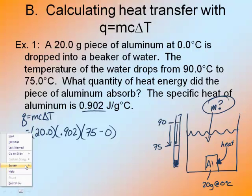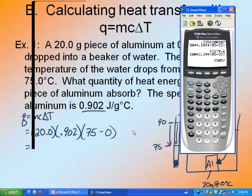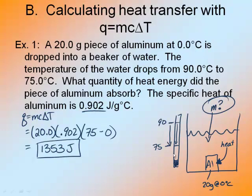So now pull out the calculator. And I say okay, 20 times 0.902 times 75 equals 1,353. And that's my answer. And so how much heat did the aluminum absorb? The aluminum absorbed 1,353 joules. If you write in the correct number of sig figs, it would be 1,350 joules.